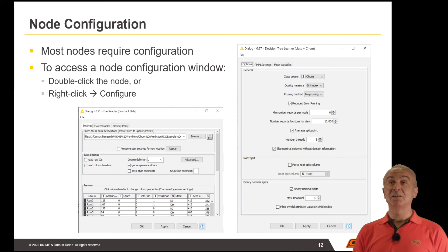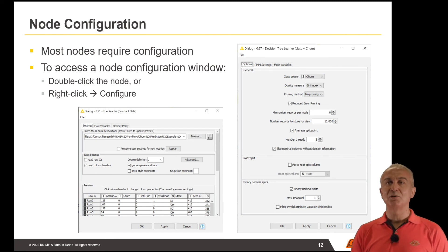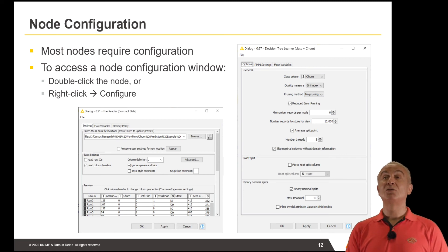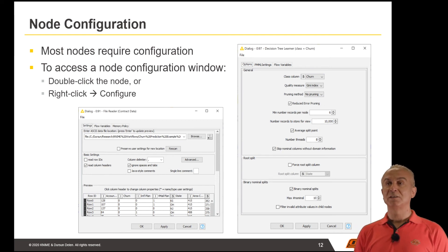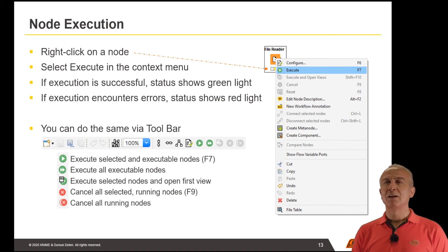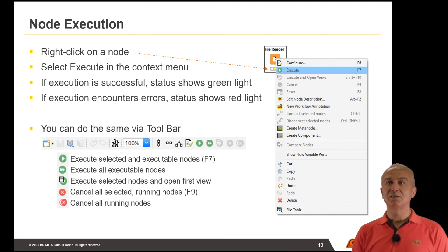Most nodes will require some configuration. They come with default settings, but you will likely need to make sure all settings are properly selected or make minor changes so that the data is processed correctly. For instance, a decision tree algorithm is configured properly to your project-specific needs before executing the node. To execute a node, you can right-click and select Execute from the context menu, go to the top menu bar to execute, or execute the whole workflow by clicking the two green arrows on the toolbar.